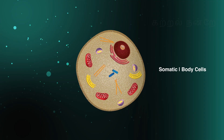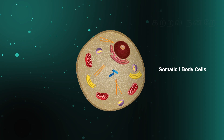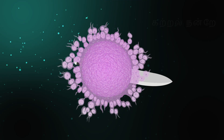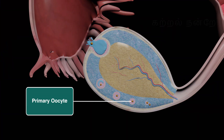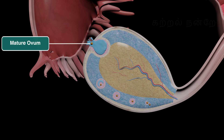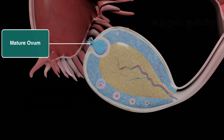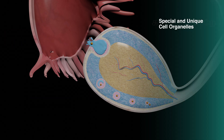Similar to somatic or body cells, the ovum also contains organelles. However, as the primary oocyte develops into a mature ovum, it acquires certain special and unique cell organelles through the action of hormones. We will discuss these features in detail in this video.